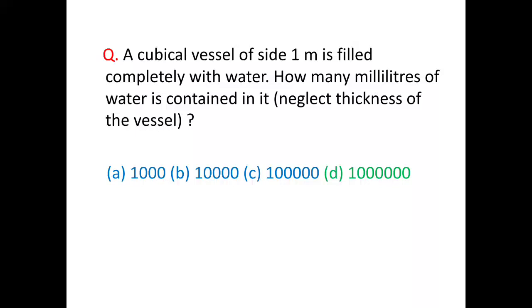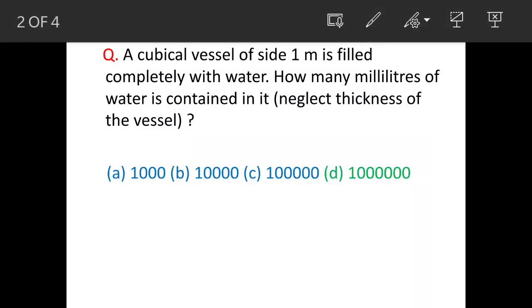Question is: a cubical vessel of side 1 meter is filled completely with water. How many milliliters of water is contained in it? Neglect thickness of the vessel. The answer is option D, 10 lakh milliliters.